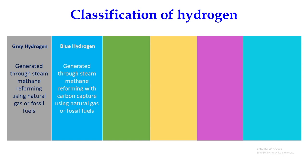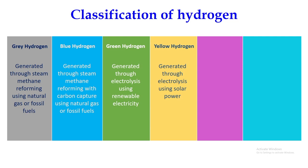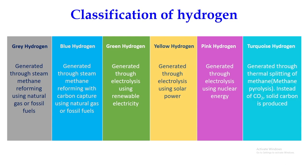In case of blue hydrogen, it is generated through steam methane reforming with carbon capture using natural gas or fossil fuels. We also have green hydrogen, when hydrogen is generated through electrolysis using solar power. We have pink hydrogen, when hydrogen is generated through electrolysis using nuclear energy. And we have turquoise hydrogen, when hydrogen is generated through thermal splitting of methane, also known as methane pyrolysis, where the output is solid carbon instead of carbon dioxide.